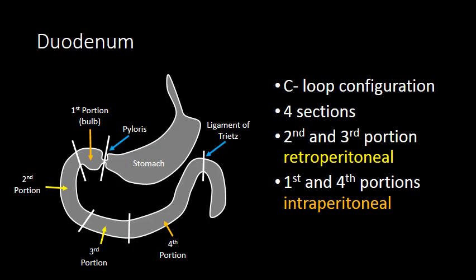When we look at the duodenum, it has a C-loop configuration and can be divided into four sections. The first portion is often referred to as the duodenal bulb — a common location for inflammatory pathology such as peptic ulcer disease. The first portion of the duodenum is intraperitoneal, so ruptures of the first portion will result in free intraperitoneal gas.